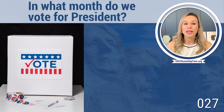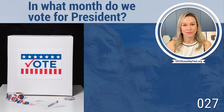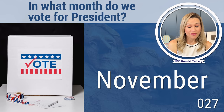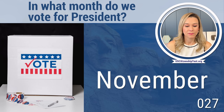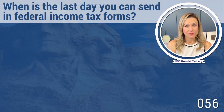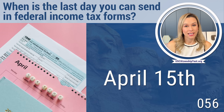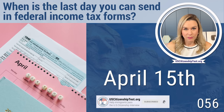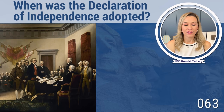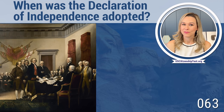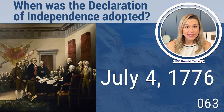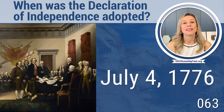In what month do we vote for president? It's always November — the same month as Thanksgiving. So we vote and there's Thanksgiving, always together. When is the last day you can send in federal income tax forms? April 15th — nobody likes this day because nobody likes to pay taxes. When was the Declaration of Independence adopted? July 4th, 1776 — you should know that because it's Independence Day every year.